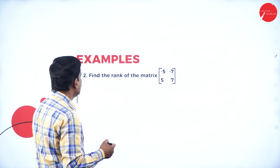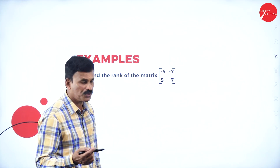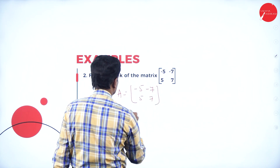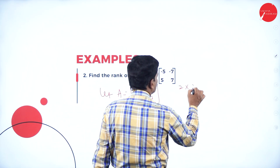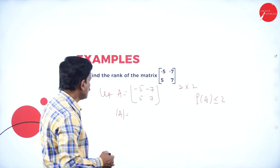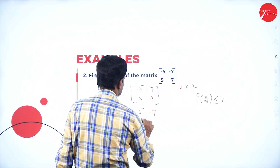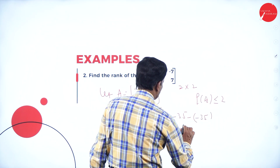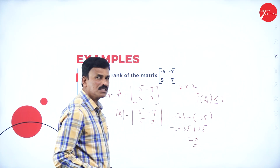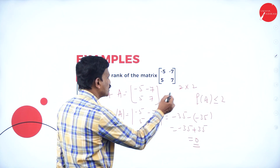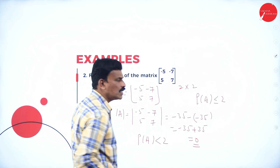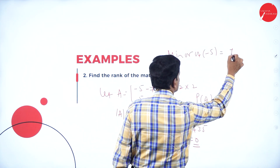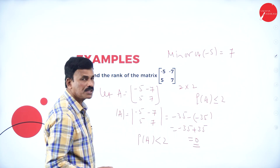Find the rank of the matrix A = [−5, −7; 5, 7]. These are simple problems you may expect for 2-mark questions. The order is 2×2, so rank of A ≤ 2. The determinant = (−5)(7) − (−7)(5) = −35 + 35 = 0. Since the determinant is zero, the rank is less than 2. Checking the minor of any element, the minor of −5 equals 7, which is not zero, so the rank is less than 2 but the minor of order 1 is non-zero.